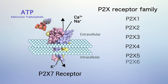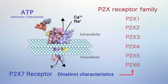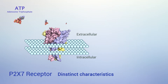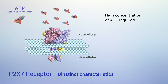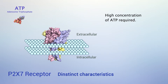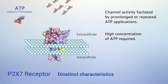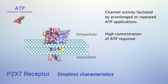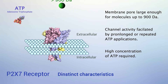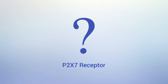The P2X7 receptor harbors many characteristics distinct from the other P2X receptors. For example, it requires an unusually high concentration of ATP for initial activation, its channel activity is facilitated by prolonged or repeated ATP applications, and it opens a membrane pore large enough for molecules up to 900 Daltons to permeate.